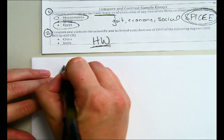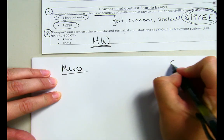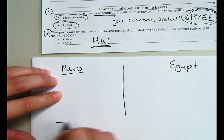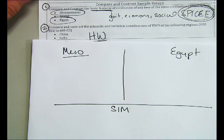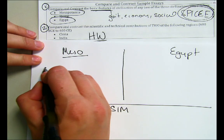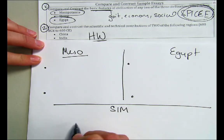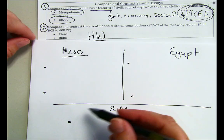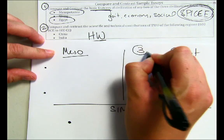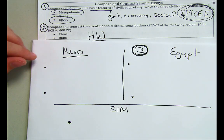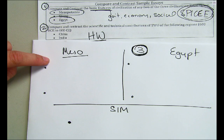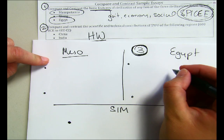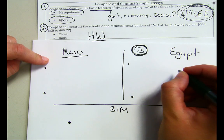We're going to compare. Write Meso, write Egypt, draw a line, and box off the similarities. For compare and contrast you need either two differences and one similarity, or two similarities and one difference—a grand total of three. And if you pick a political category for Meso, you have to pick a political for Egypt, because you need direct comparisons.